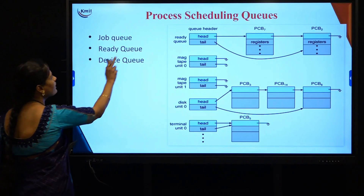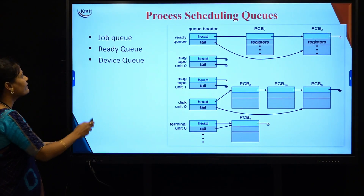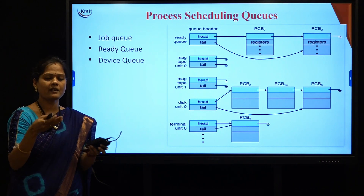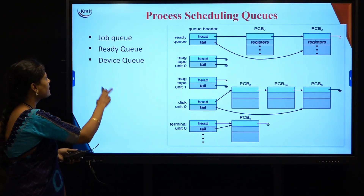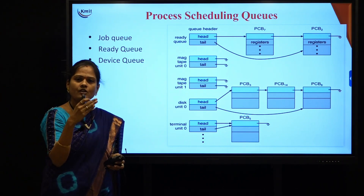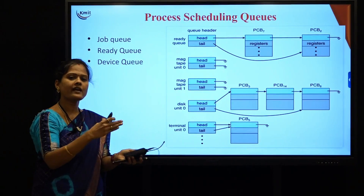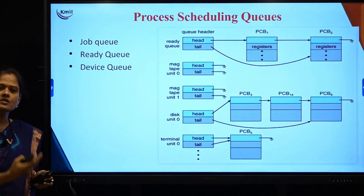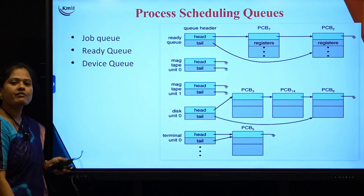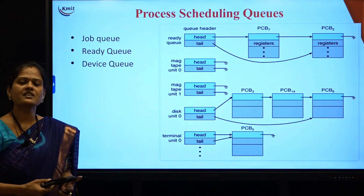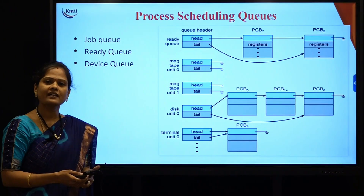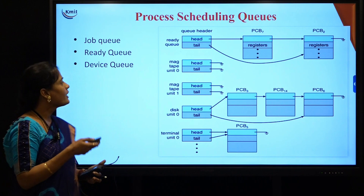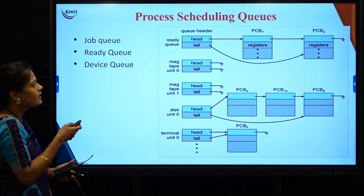When you go for process scheduling queues, we have three types of queues: job queue, ready queue, and device queue. All processes present in the system will be present in the job queue, which is in secondary memory. When they are moved into main memory, they will be present in the ready queue. If a process is waiting for an input/output device — keyboard, external device, hard disk — it will be in the device queue. Each I/O device has its own device queue, whereas there is a single job queue and a single ready queue.